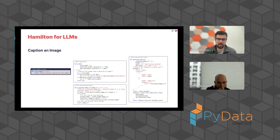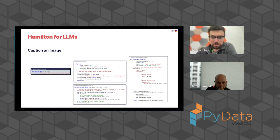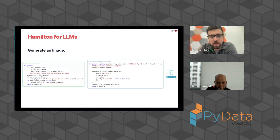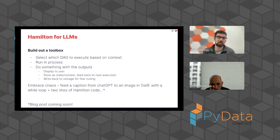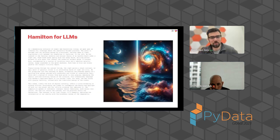These start to form a toolbox of different little DAGs for different LLM capabilities. You select which DAG to execute based on context, run it, and do something with the outputs — display them to the user, store state, feed back to the next execution, even write back to storage for fine tuning later. You can tie them together with a control flow that acts as an agent, using an LLM to decide which DAG and how to run the next one, building more complex stateful systems. You can swap out foundational models, vector stores, etc. with config.when. I even fed a caption from ChatGPT to an image generator in DALL-E with a while loop and two lines of Hamilton code.